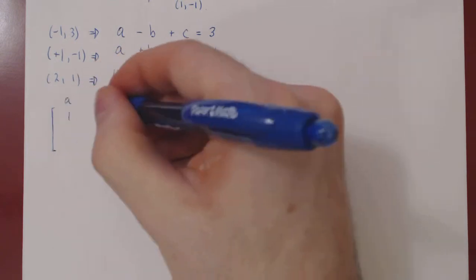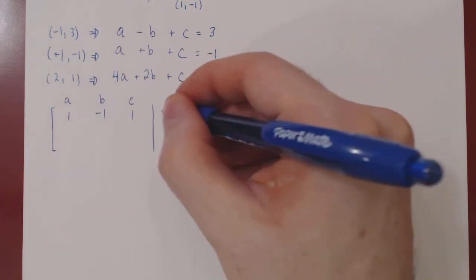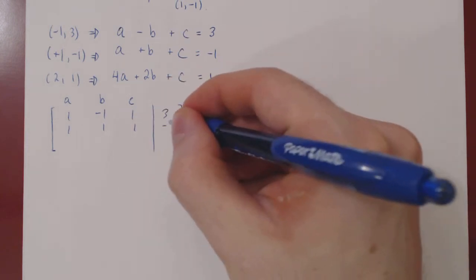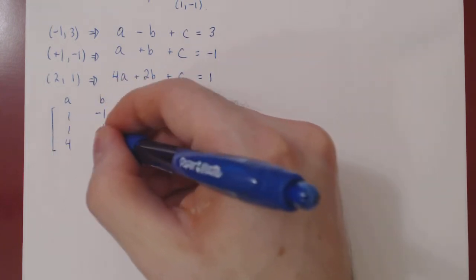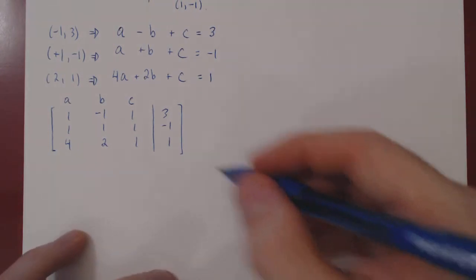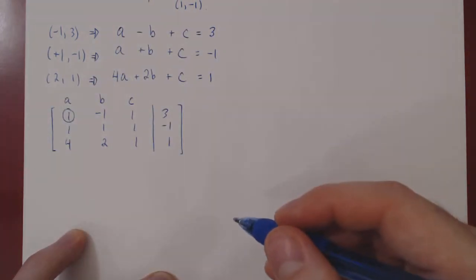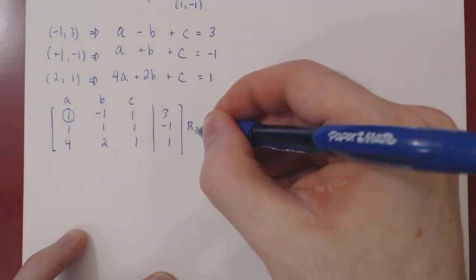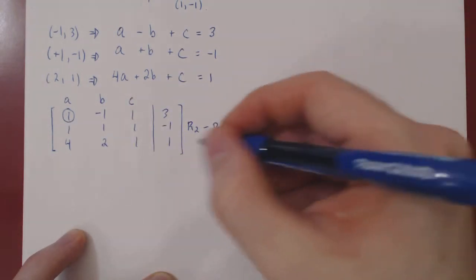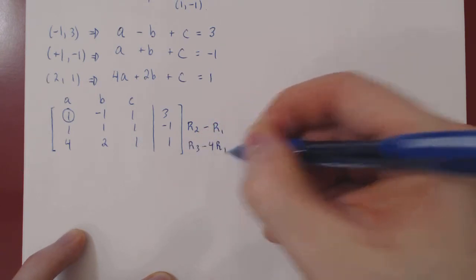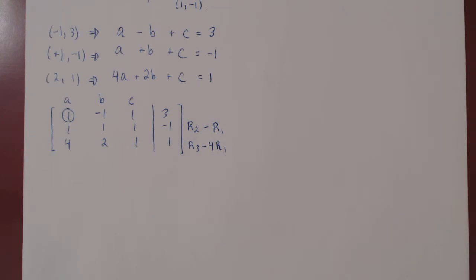First row, one, negative one, one, three. Second row, one, one, one, negative one. Third row, four, two, one, one. As we have just said, we already have our leading one in the leftmost column and top row. So we'll kill the entries below. Row two minus row one. Row three minus four row one. As always, we recopy the rows that we are not changing.